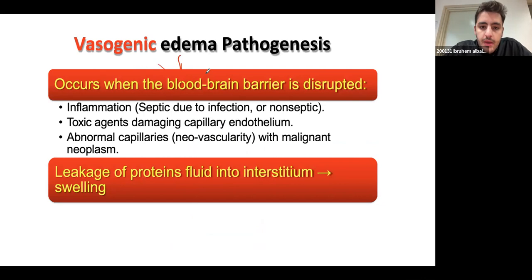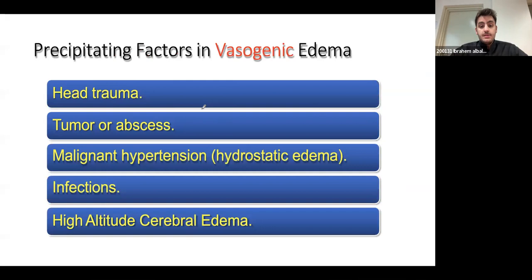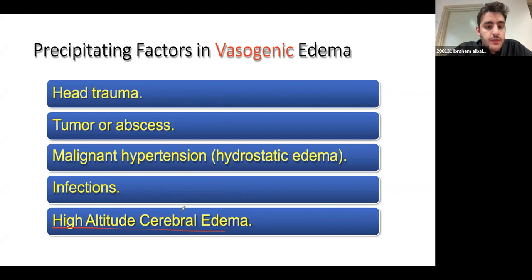Vasogenic edema usually happens when the blood-brain barrier is disrupted. This can be due to inflammation — bacteria or white blood cells — which destroys the barrier and causes fluid to leak into the interstitium. Other causes include toxic agents, malignancy, and trauma. High altitudes with cerebral edema can also cause it: low oxygen leads to vasodilation of cranial blood vessels, increasing blood flow and causing more fluid to leak. The key word is interstitium — associate it with vasogenic.